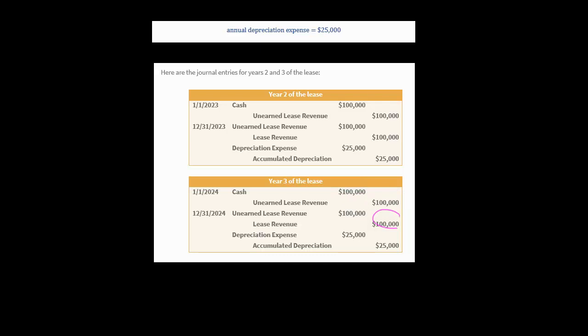In year three, same process: increase cash when paid, record the liability, book the revenue when earned, and record $25,000 in depreciation. Notice, however, that the asset has not been fully depreciated. The lessor would continue to depreciate the asset beyond year three, because remember, they depreciate it over its entire economic life of 10 years. So the lease ends after year three, but the lessor still has the asset, and there are an additional seven years where they'll continue to record depreciation.